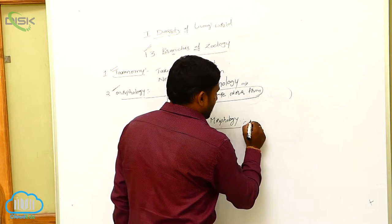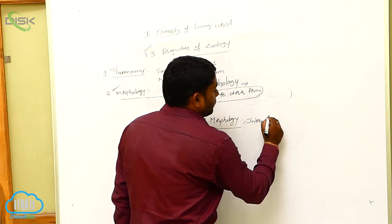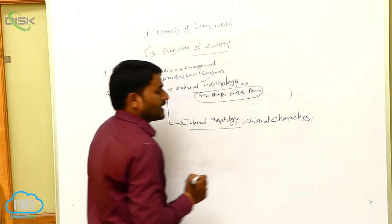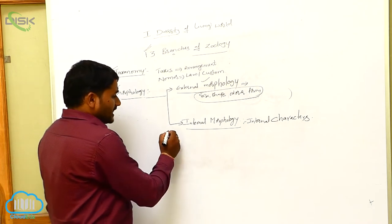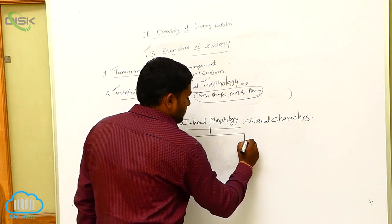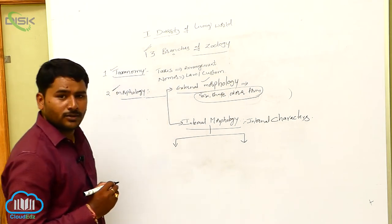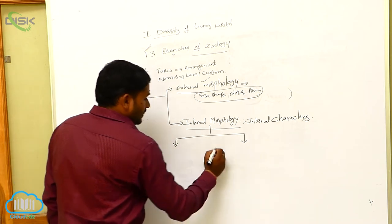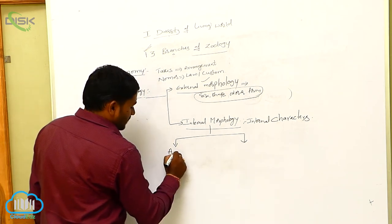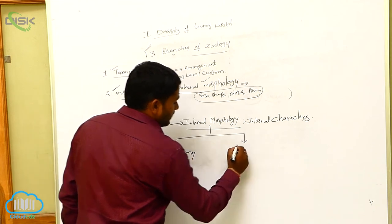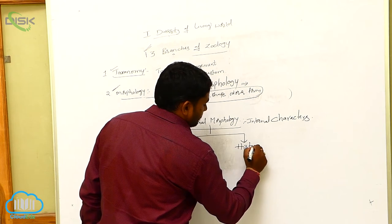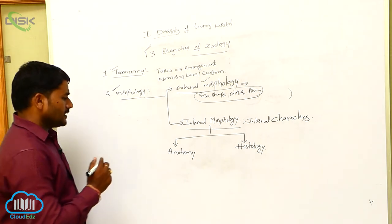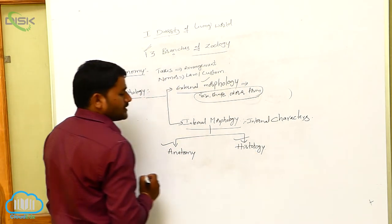Next, internal morphology is the study of internal characters. Internal morphology is divided into two types: anatomy and histology.